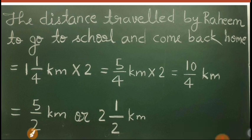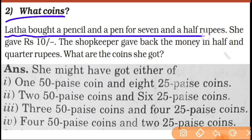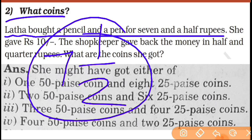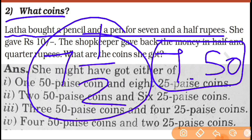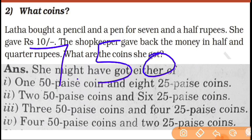Let's go to question number 2 — what coins? Latha bought a pencil and a pen for 7 and a half rupees. That means 7.5 rupees, or you can also say 7 rupees 50 paise.